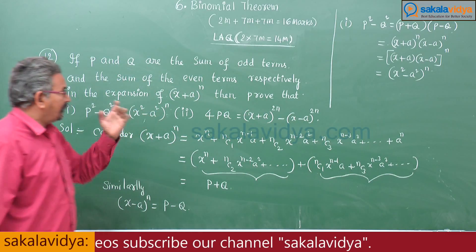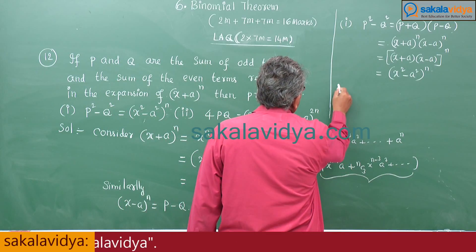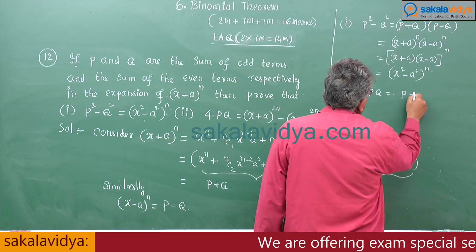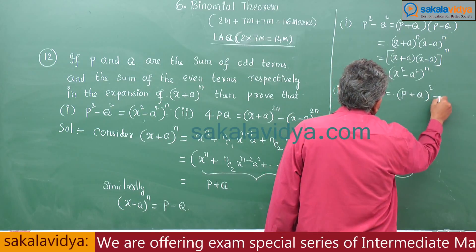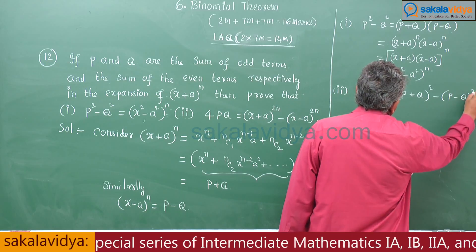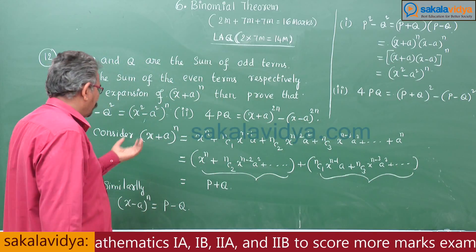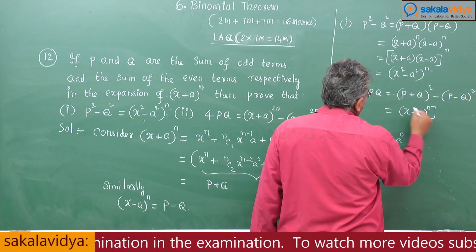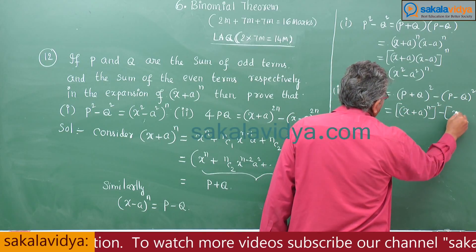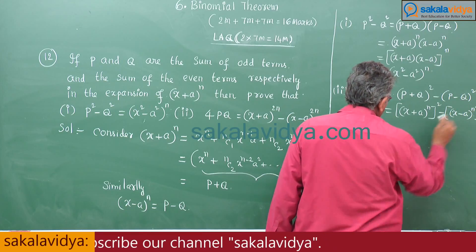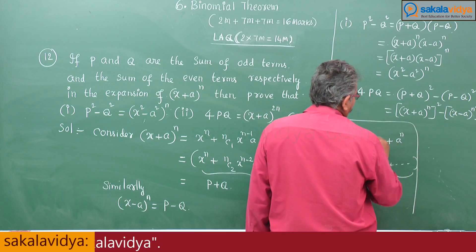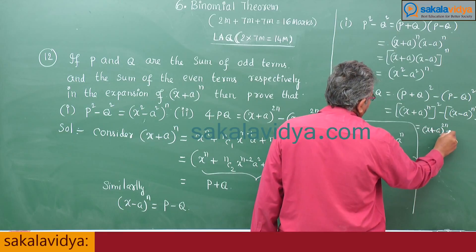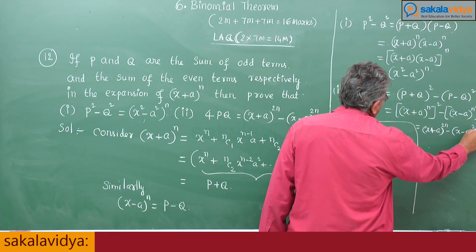For the second identity, 4PQ: in algebra, (P + Q)² - (P - Q)² = 4PQ. Substituting, this is (x + a)^n² - (x - a)^n², which equals (x + a)^2n - (x - a)^2n. Hence it is proved.